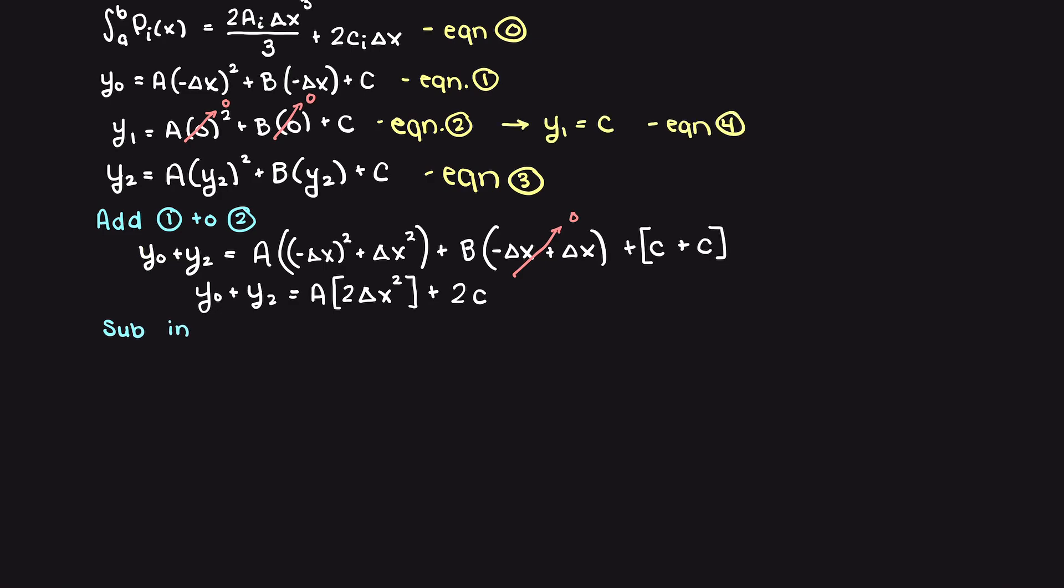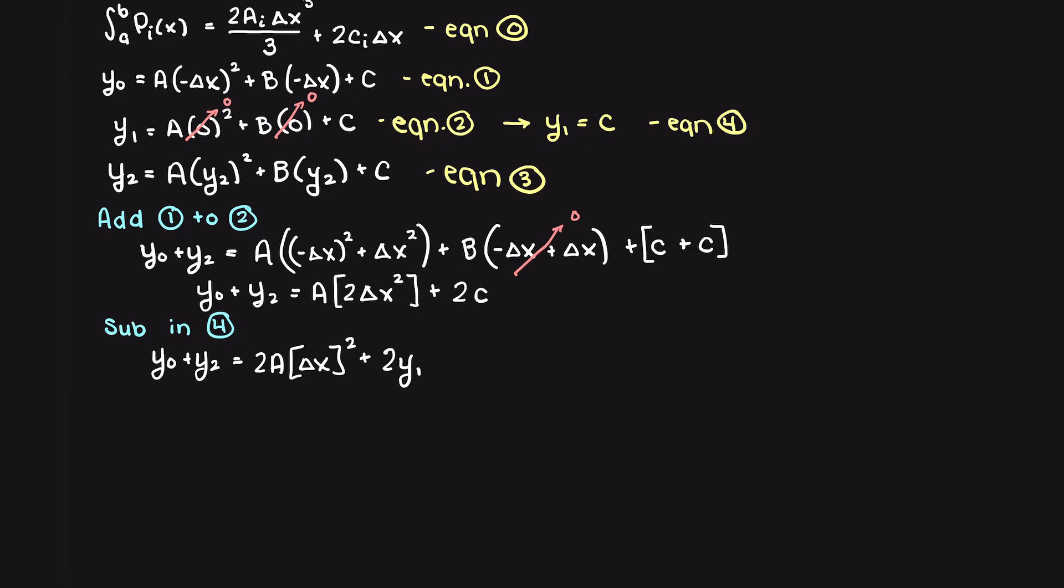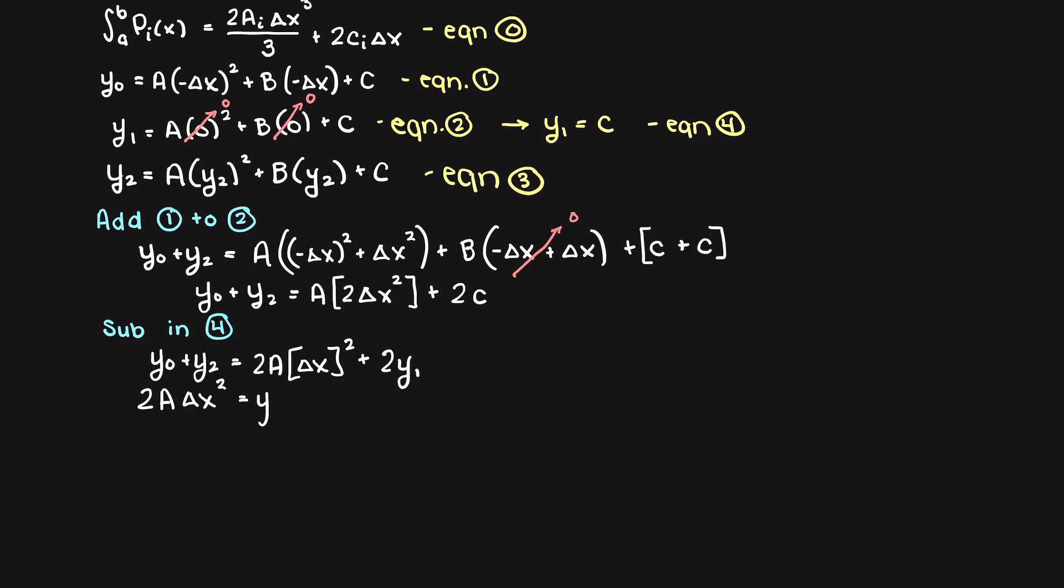Therefore, we can substitute equation 4 into our working equation. Simplifying, we can isolate for 2a delta x squared, and let's call this equation 5. We are getting very close now.